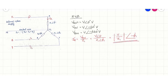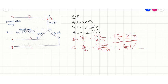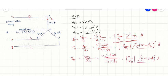Similarly, we can find the phase currents IY and IB. IY = Vyn / Z2 = V∠−120° / Z2∠φ2, having magnitude V/Z2 with phase angle (−120° − φ2). Similarly, IB = Vbn / Z3.